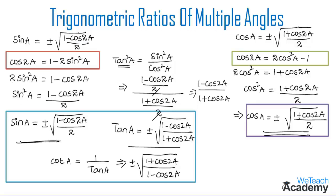Make a note of all these formulas: cos 2a is equal to 1 minus 2 sin square a, and hence sin a is equal to plus or minus under root 1 minus cos 2a by 2. The formula for tan a is equal to plus or minus under root 1 minus cos 2a by 1 plus cos 2a. The formula of cot a is the reciprocal of tan a, that is plus or minus under root 1 plus cos 2a divided by 1 minus cos 2a. The formula of cos a is plus or minus under root 1 plus cos 2a by 2. Also, cos 2a is equal to 2 cos square a minus 1, which is also equal to 1 minus 2 sin square a. Learn all these formulas as they are useful in solving examples in further videos.